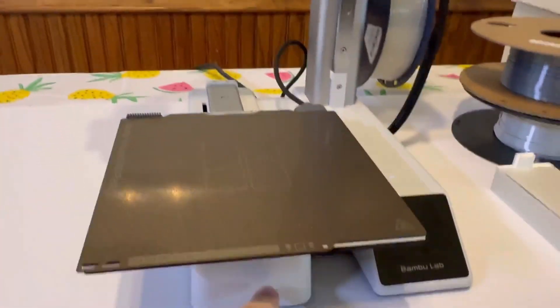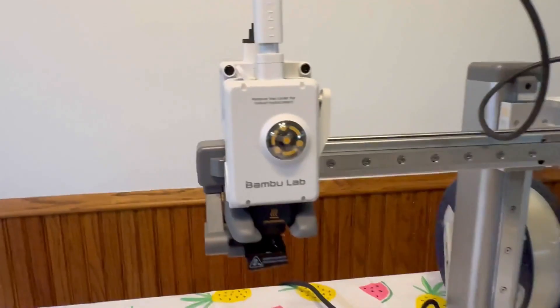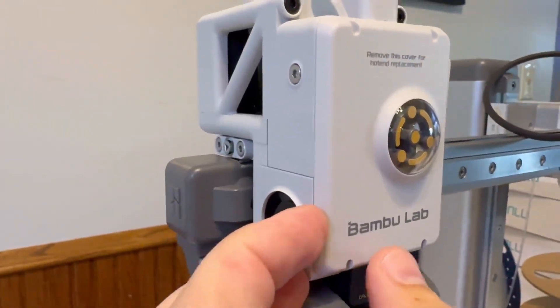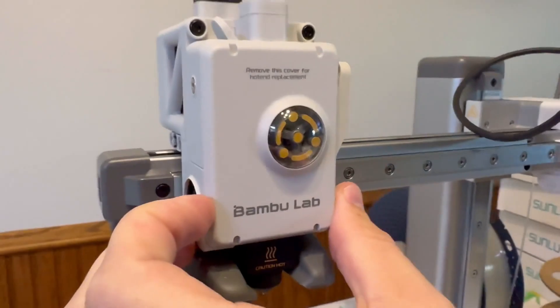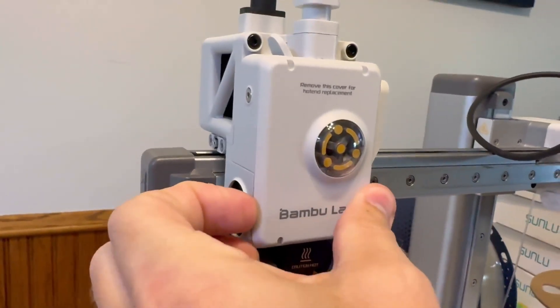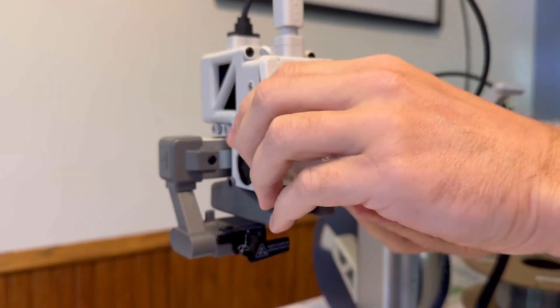Step number one is to make sure your machine is shut off. Step number two, to take this face off. What I usually do is put my fingernail in this little section right here, move the head unit over a little bit, just kind of get your nail in there and peel it off here. Give that a little pull.